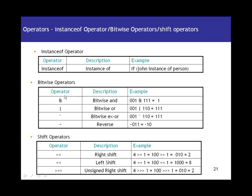Bitwise operators: for bitwise AND, if both bits are 1 you get 1, else 0. For bitwise OR, if either bit is 1 you get 1, else 0. For bitwise XOR, if both bits are 0 or both are 1 you get 0, else you get 1. The bitwise NOT negates the value.